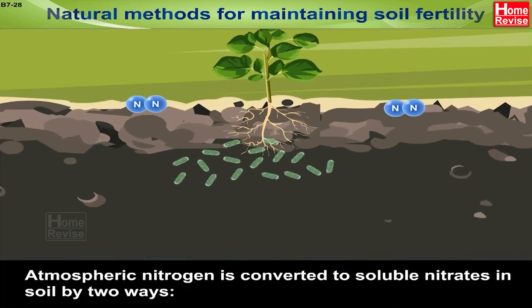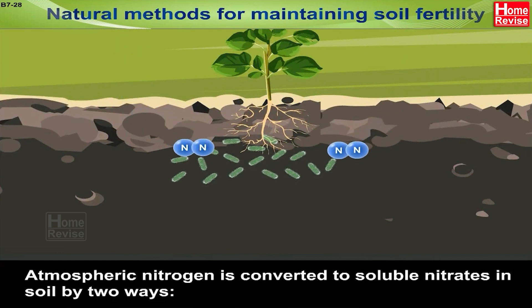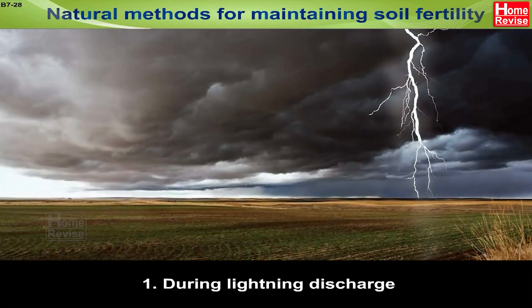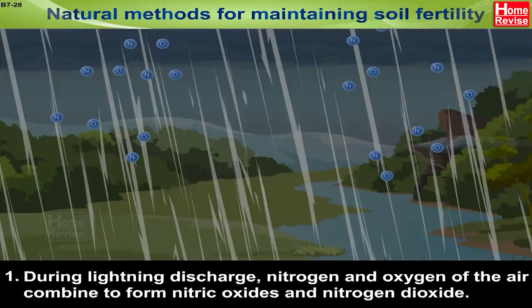Natural Methods for Maintaining Soil Fertility. Atmospheric nitrogen is converted to soluble nitrates in soil by two ways: during lightning discharge, and by symbiotic bacteria.